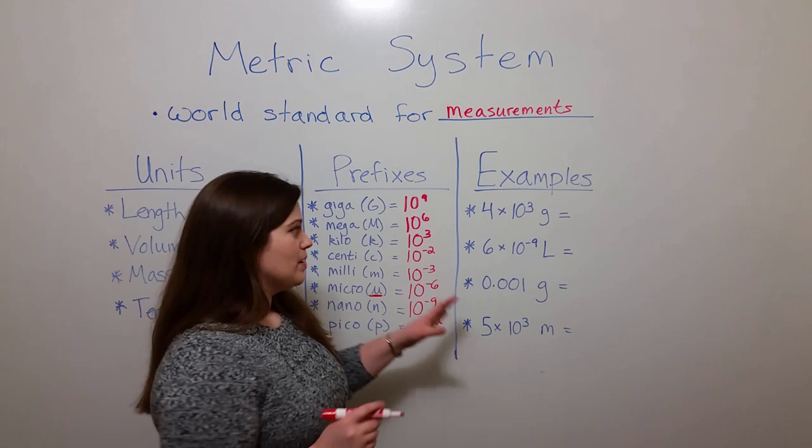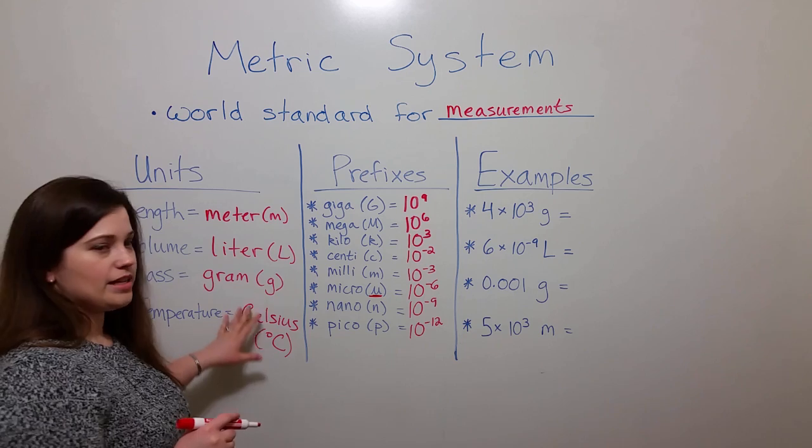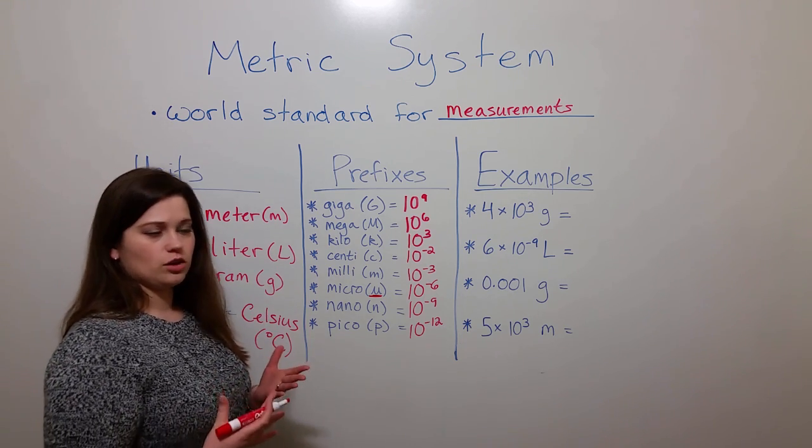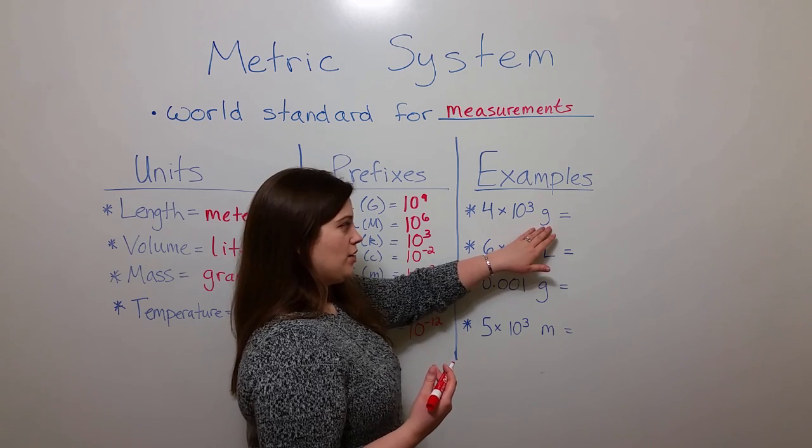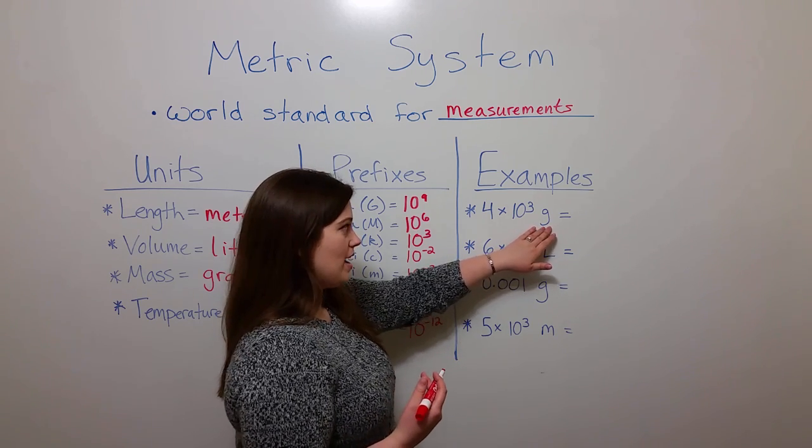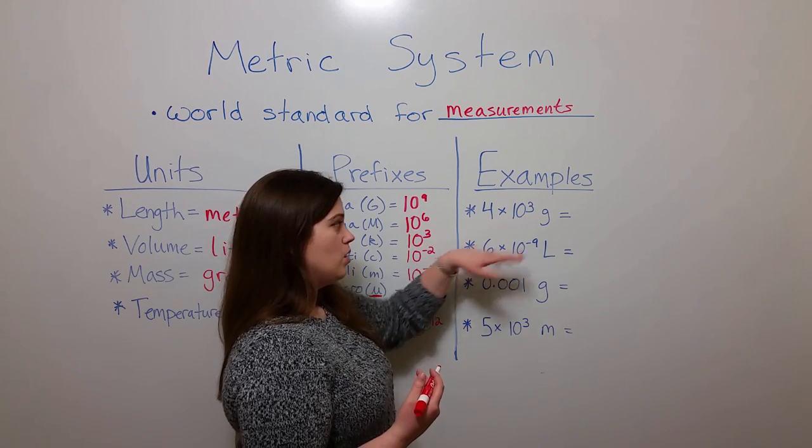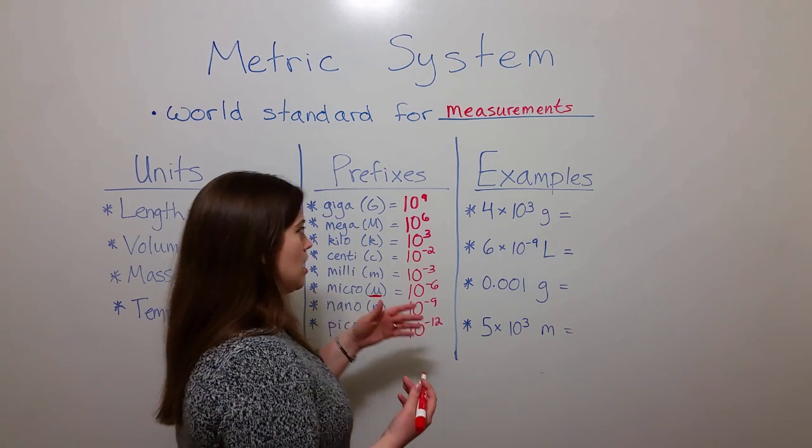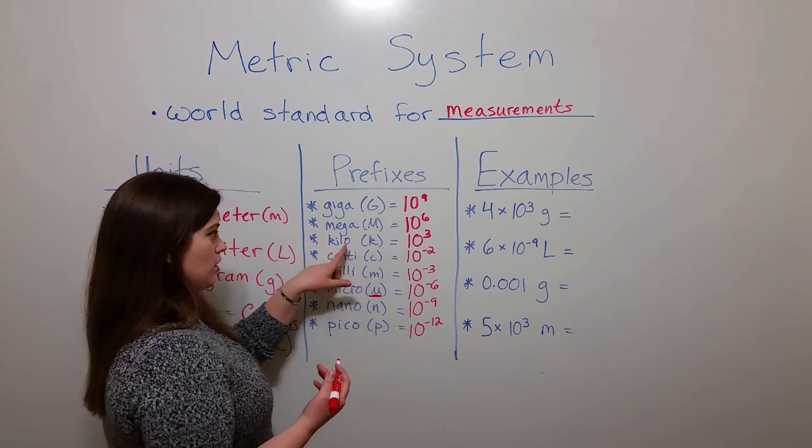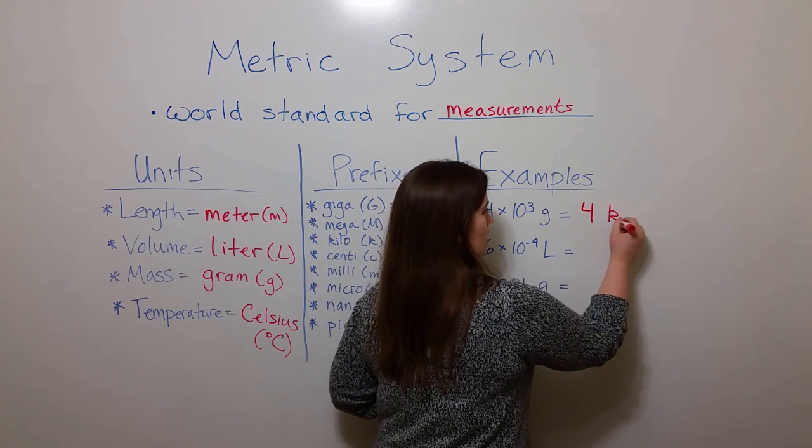Now let's look at some examples of how these prefixes are added to these base units to give a certain measurement. For example, if you are measuring the mass of something, you're using grams, and it is four times ten to the third, or four thousand. Instead of writing four thousand grams, you could use the prefix for ten to the third, which is kilo, and this would be four kilograms.